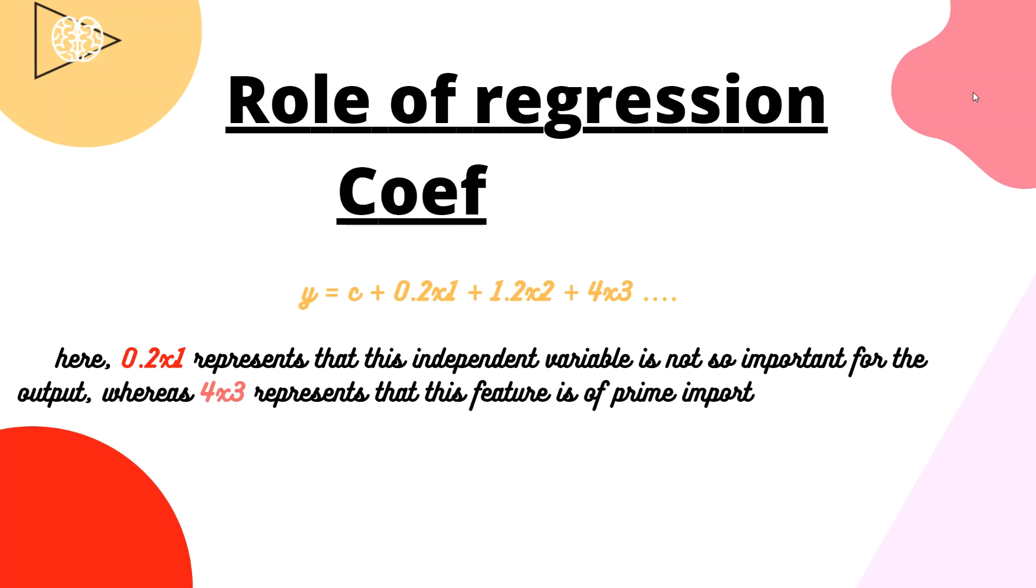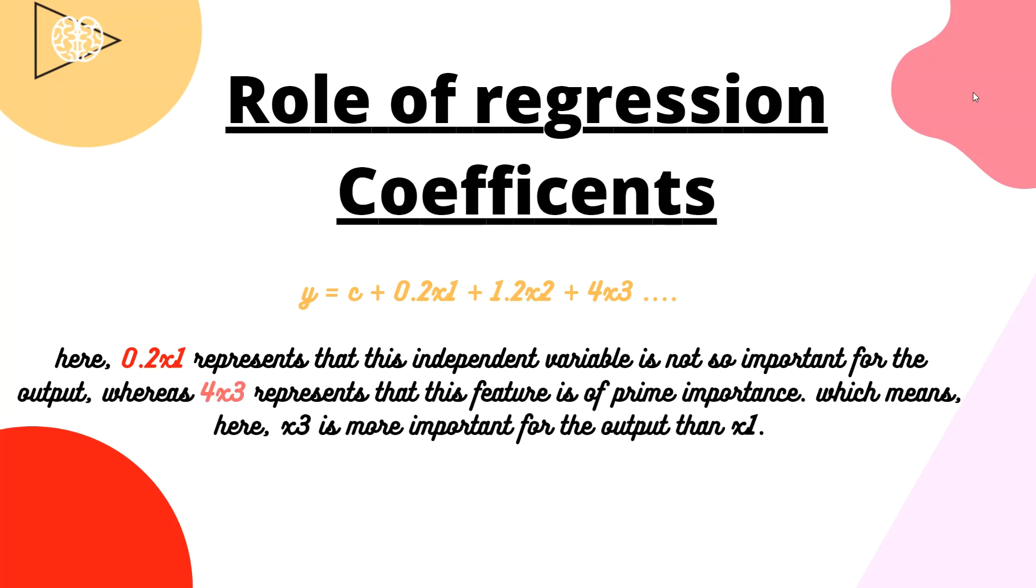Now we will learn about the role of regression coefficients. Consider this equation: y equals c plus 0.2x1 plus 1.2x2 plus 4x3. Here, 0.2x1, this 0.2 represents that this independent variable is not so important for the output, whereas 4, which is linked with x3, represents that this feature is of prime importance, which means x3 is more important for the output than x1.